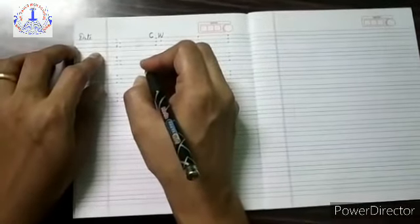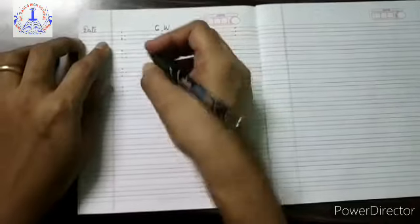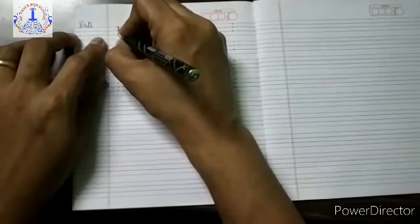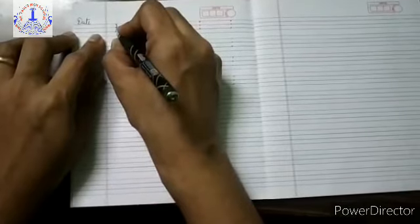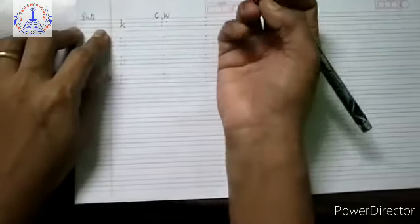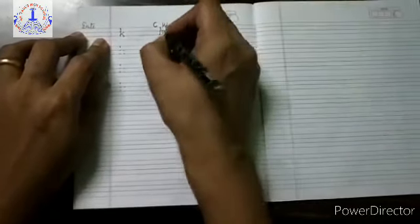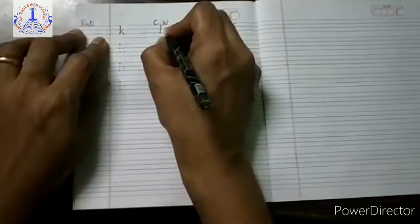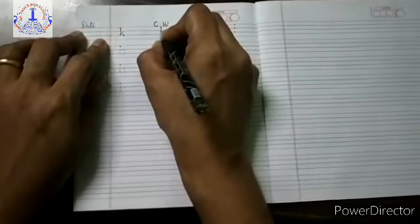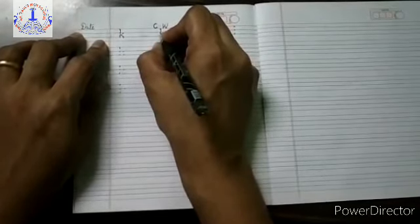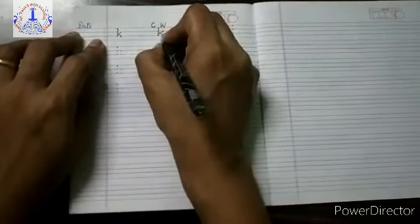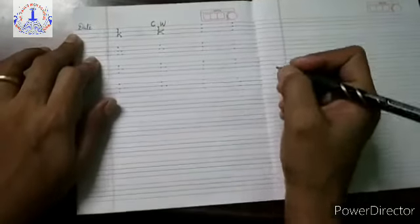Now children, first you have to write on the dotted lines. You have to join these dots and make small letter K. So, from the red line to the blue line, standing line to the second blue line. Then, on the first blue line, one slanting line, joining the standing line, and then bring it down. Small letter K.